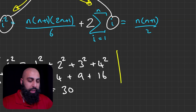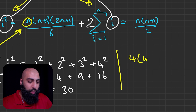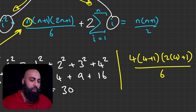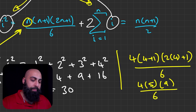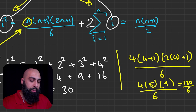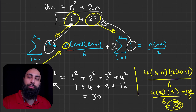Replacing n with 4 in the formula: 4(4+1)(2×4+1) all over 6. So that's 4 times 5 times 9 divided by 6. 4 plus 1 is 5, 2 times 4 is 8 plus 1 is 9, so we have 4 times 5 equals 20, times 9 is 180, divided by 6 is 30. The summation formula gives us the same value when doing the sum of i squared.